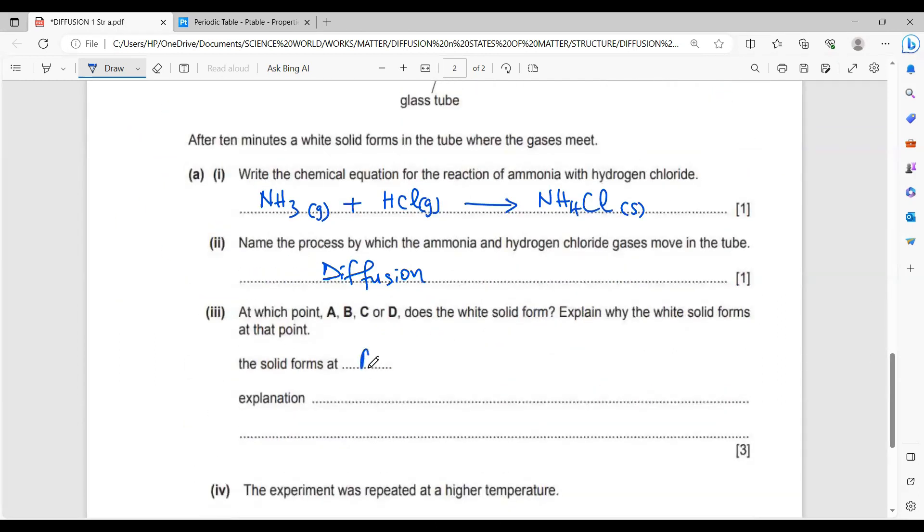So you see that your ammonia has a low molecular mass. It's kind of lighter. So your ammonia is lighter and it's going to diffuse more. We expect the white solid to form at A. The white solid forms at A. Why? Because lighter ammonia or low molecular mass ammonia moves faster than heavy hydrogen chloride gas. Lighter ammonia diffuses faster than your heavy hydrogen chloride gas.